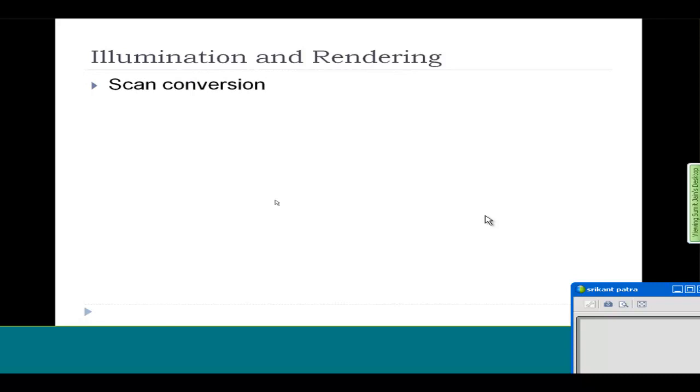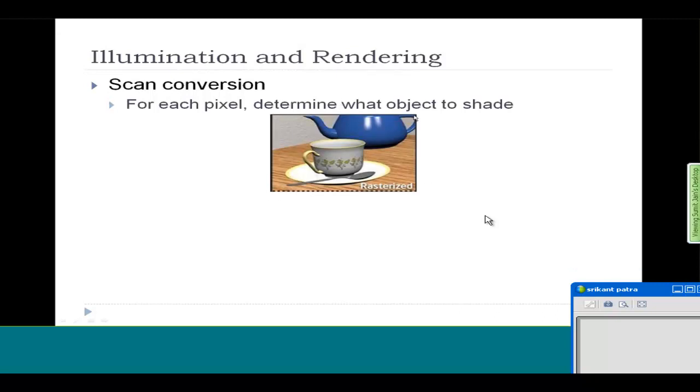First is scan conversion. What does that mean? You want to color the pixels of your 2D image. For each pixel, you determine what object in the scene you want to shade. You go by each pixel one at a time and color it. This is a rendered image through scan conversion. You can see it doesn't look very real. The spoon here has no shadows and doesn't look realistic.